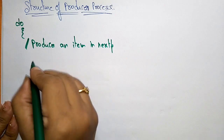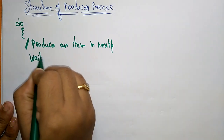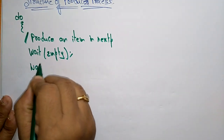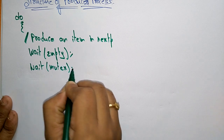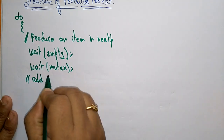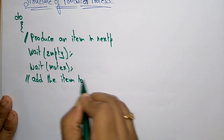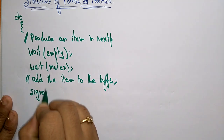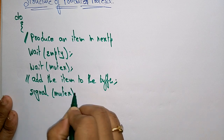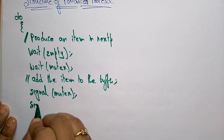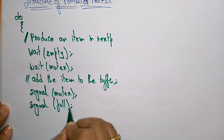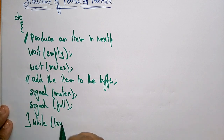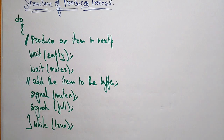In the producer process, first we produce an item. Then we call wait(empty), then wait(mutex). After that, we add the item to the buffer — this is the critical section. After adding the items to the buffer, we call signal(mutex) and then signal(full). This process will work whenever the condition is true. This is the structure of the producer process.